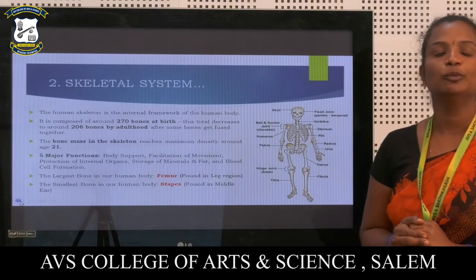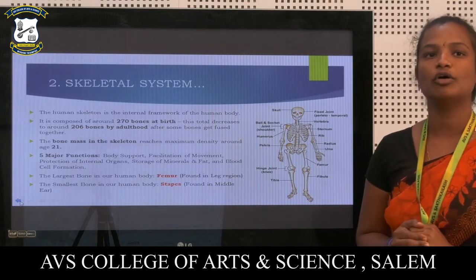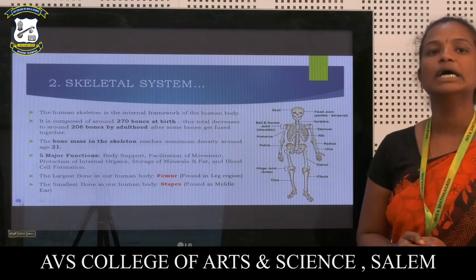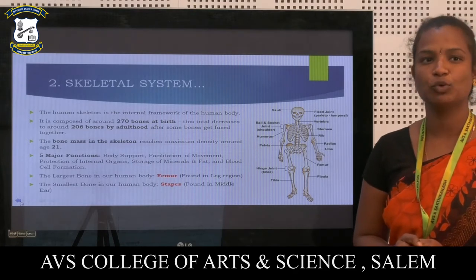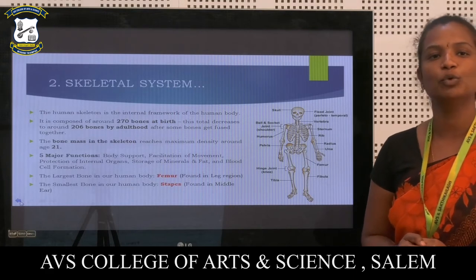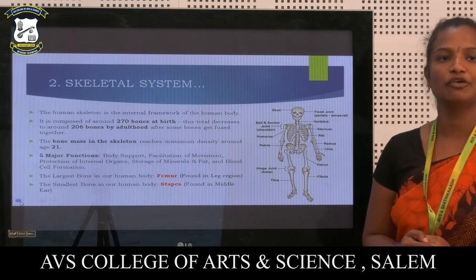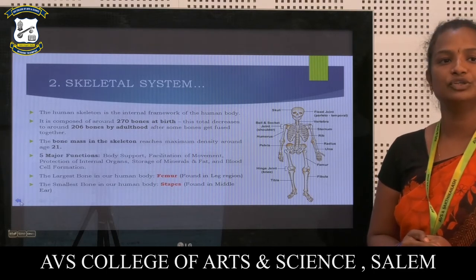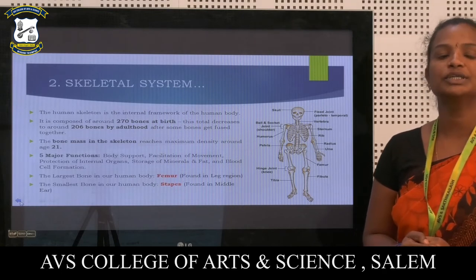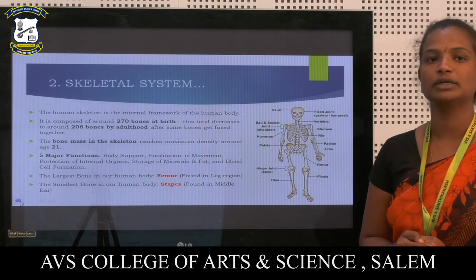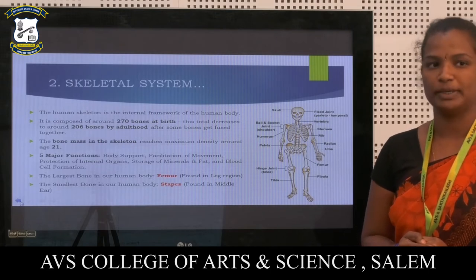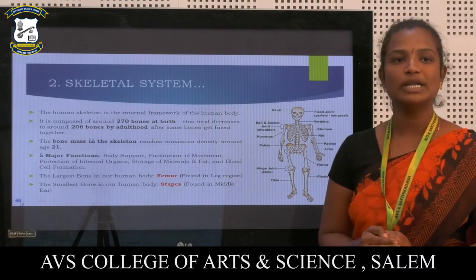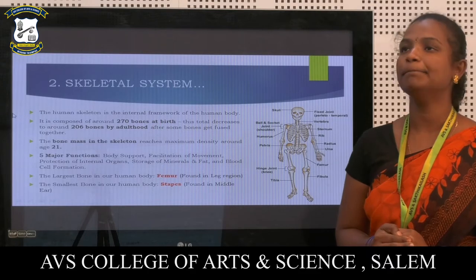The human skeleton is the internal framework of the human body. It is composed of around 270 bones at birth. This total decreases to around 206 bones by adulthood after some bones get fused together. The bone mass of the skeleton reaches maximum density around age 21. Five major functions: body support, facilitation of movement, protection of internal organs, storage of minerals and fat, and blood cell formation. The largest bone in the human body is the fibula, found in the leg region. The smallest bone in the human body is the stapes, found in the middle ear.